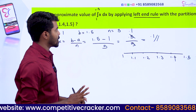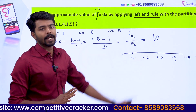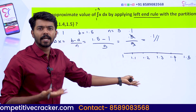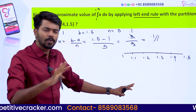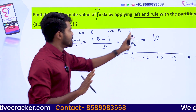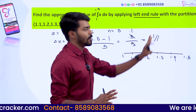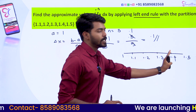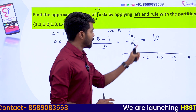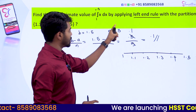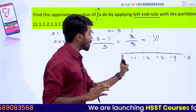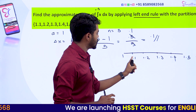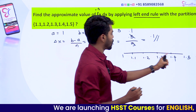Now I will start with the left-end rule. The number of partitions is 5, so we use 5 values in the left-end rule: 1, 2, 3, 4, 5.